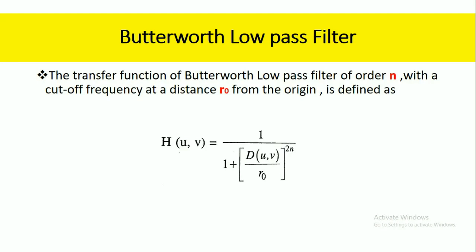Here is the transfer function of the Butterworth low pass filter of order n with a cutoff frequency at a distance R0 from the origin. It is defined as: H(u,v) = 1 / (1 + (D(u,v) / R0)^(2n)), where R0 represents the cutoff frequency distance from the origin, and n represents the order of the Butterworth low pass filter.